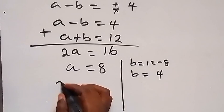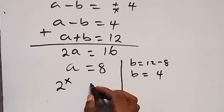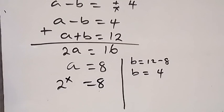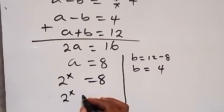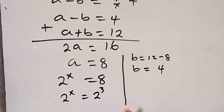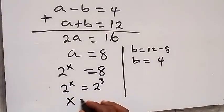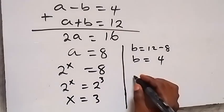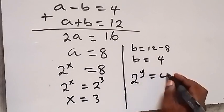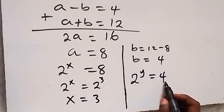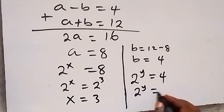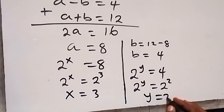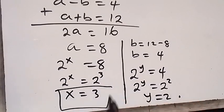Recalling that a equals 2 raised to power x, we have 2 raised to power x equals 8, which is 2 raised to power 3. Since the bases are equal, x equals 3. Similarly, b equals 2 raised to power y gives 2 raised to power y equals 4, which is 2 raised to power 2, so y equals 2. Therefore the solution is x equals 3 and y equals 2.